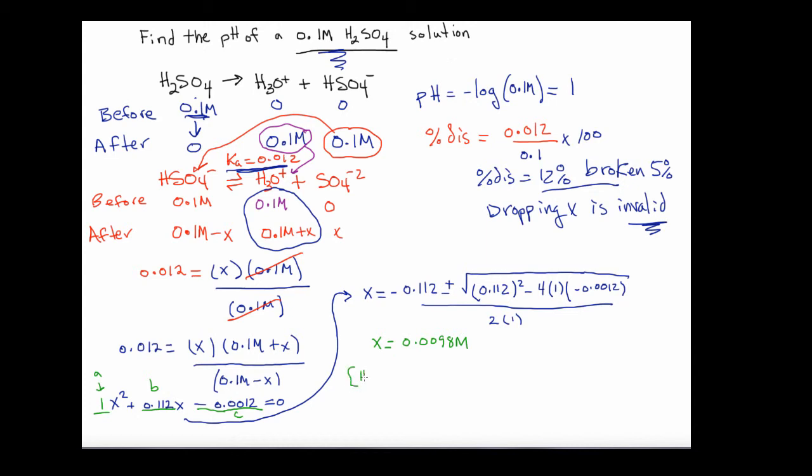To finish, that means that the H3O+ is actually going to be 0.1 plus 0.0098 molar, so the total is 0.1098. When we take the pH of this value, it's going to be minus the log of 0.1098, and we're going to get for a pH 0.96.